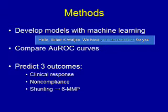The aims of our study were to develop optimal models with machine learning — an approach used by companies like Amazon to predict what products you'd be willing to buy. We would then compare the areas under the receiver operating characteristic curves for three outcomes: one, to predict clinical response; two, to predict non-compliance; and three, to identify shunters in whom greater than 95% of the drug is converted to 6-MMP.